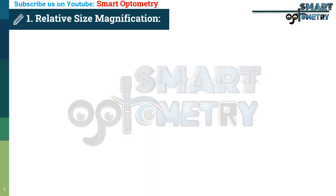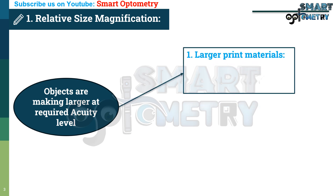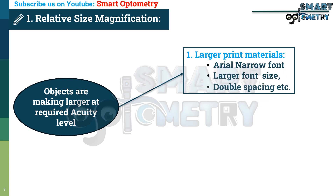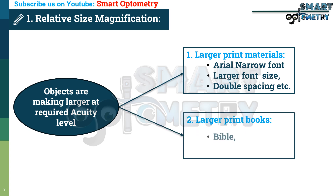In relative size magnification, objects are made larger at the required acuity level so that the patient can see easily. This can be achieved in two ways: one, larger print materials like Arial Narrow font, larger size, and double spacing between each word; another way is larger print books like the Bible, playing cards, dictionaries, etc.